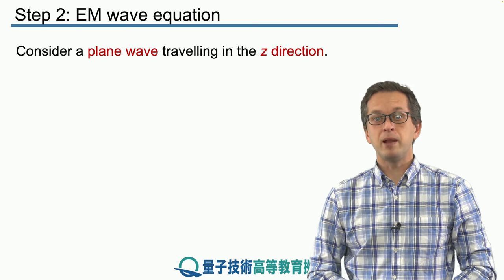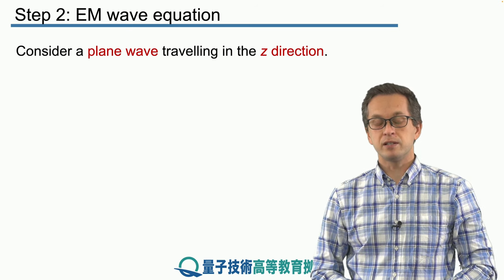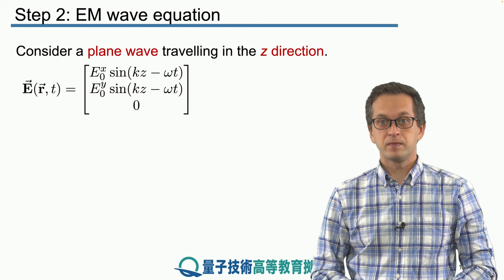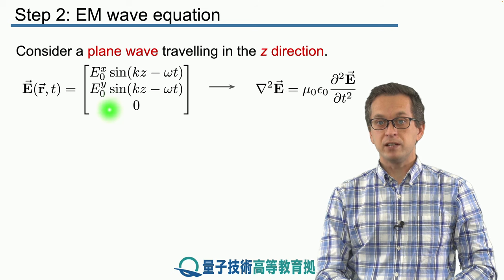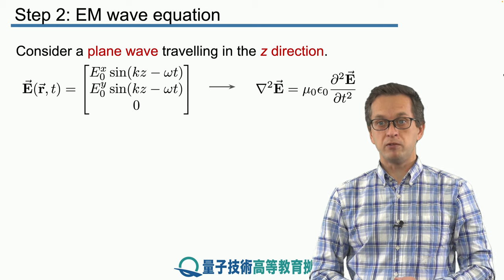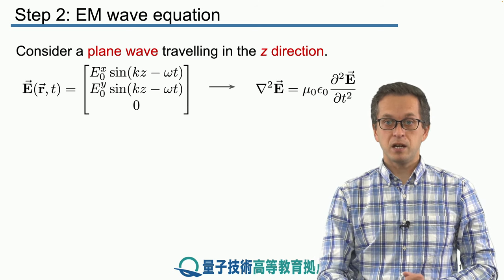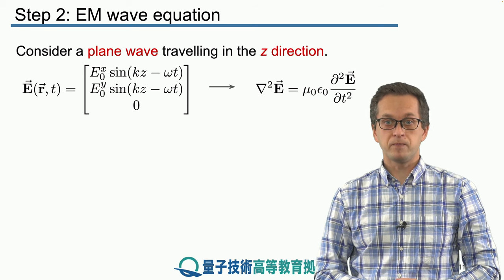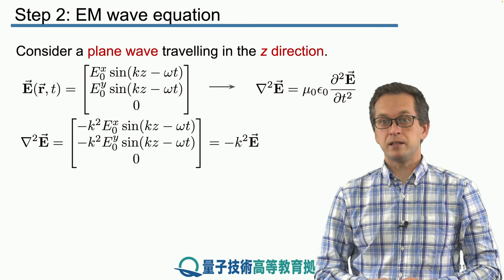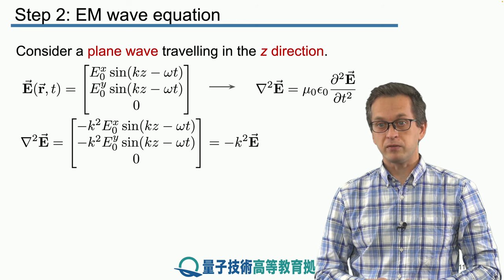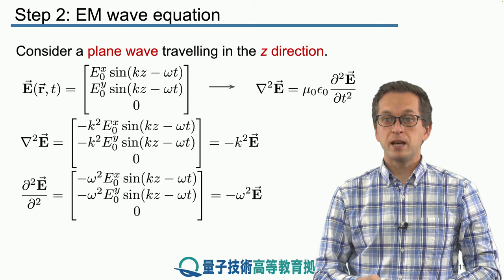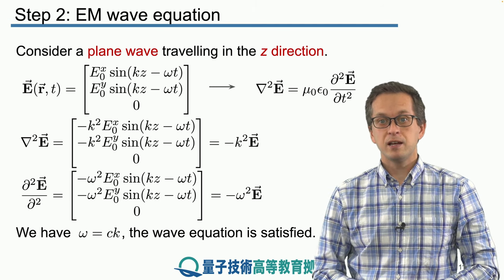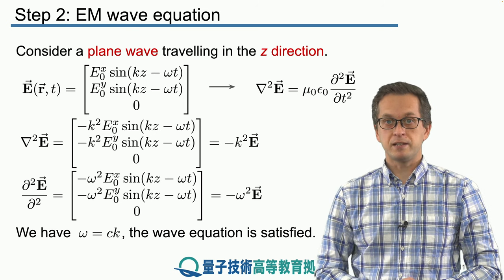Let's consider a plane wave traveling in the z direction, to give us practice and confidence that the plane waves we consider for electric and magnetic fields do satisfy the wave equation. If the wave travels in the z direction, the electric field can vary only in the x and y directions — its component in z is zero. Substituting this expression for E into the wave equation, the left hand side gives minus k squared times E, and the right hand side gives minus omega squared times E. Using the dispersion relation omega equals c times k, the wave equation is satisfied.